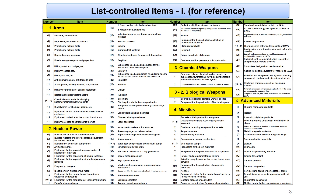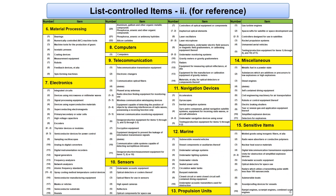You can see the specific items controlled by the list control on the screen. You can check the details of these items in the goods technologies integrated matrix table.